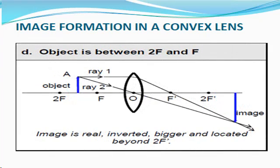If an object is between 2F and F, the image is real, inverted, bigger, and located beyond 2F.